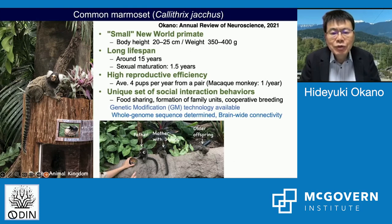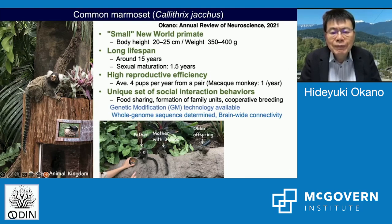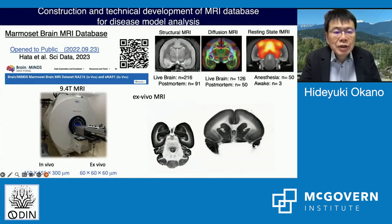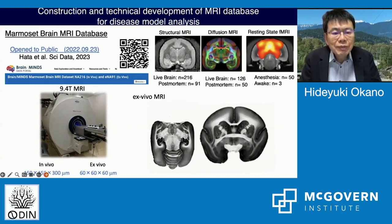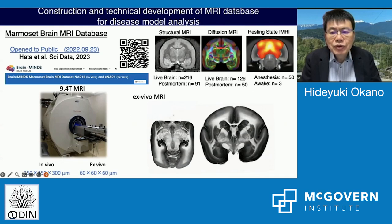It's a small New World primate. It has long lives, around 15 years, but their cellular maturation is early — 1.5 years. They have high reproductive efficiency and show a unique set of social interaction behaviors such as food sharing, formation of the family unit, and cooperative breeding. We made a marmoset brain MRI database open to the public last year through this QR code — please try it.